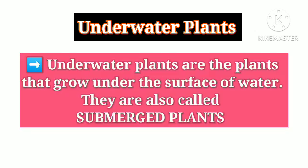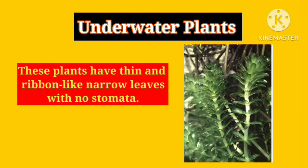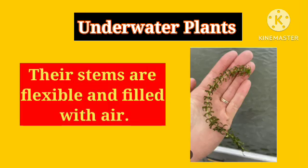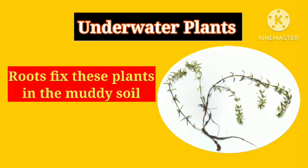Underwater plants are the plants that grow under the surface of water. They are also called submerged plants. These plants have thin and ribbon-like narrow leaves with no stomata. Their stems are flexible and filled with air which helps them to move along the flow of water. Roots fix these plants in the muddy soil.